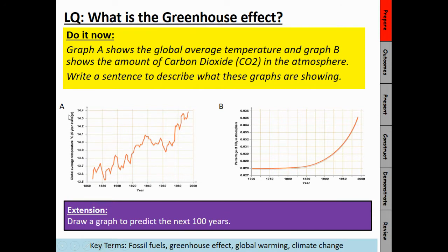Graph A shows the global average temperature — that is the temperature around the world. You've got the temperature going up on this axis, and then you've got the time going up on this axis of the year. Graph B then shows the amount of carbon dioxide in the atmosphere — you've got the percentage of carbon dioxide going up on this axis, and you've got the years going up on this axis. Pause the video, write a sentence or two to describe what is happening in the graphs, and what do you think that is showing. If you get that done quite quickly, then draw a graph to predict what you think might happen in the next 100 years. Pause the video now.